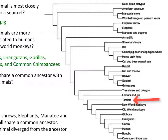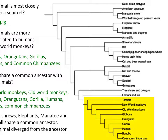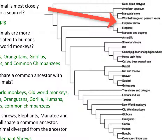Next: tarsiers share a common ancestor with which animals? If you said new world monkeys, old world monkeys, gibbons, orangutans, gorillas, humans, bonobos, and common chimpanzees — you got it. They are all a part of the same clade, and their common ancestor is denoted at the node. Lastly, elephant shrews, elephants, manatee, and dugong all share a common ancestor — which animal diverged from the ancestor first? If you said elephant shrews, then you are correct. They diverged from the common ancestor the earliest and are in the same clade as the others.